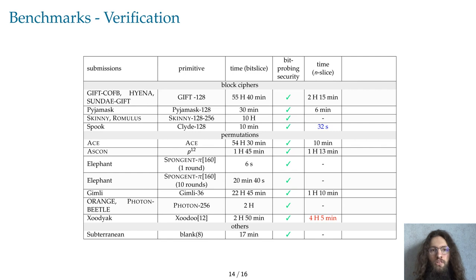Verifying security in the register-probing model is usually faster than in the bit-probing model case, as there are typically 32 or 64 times less multiplications to examine. Contrary to what happens in the bit-probing model case, it is very easy even for large circuits to find flaws in the register-probing model. This explains why we found attacks for the implementations of Clyde, Ace and Gimli.